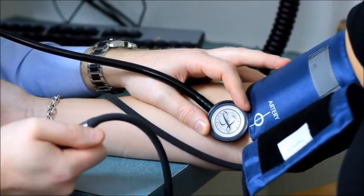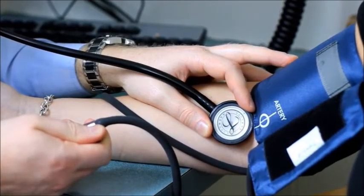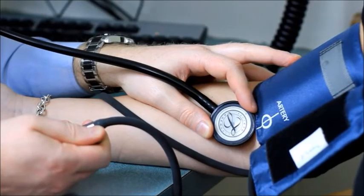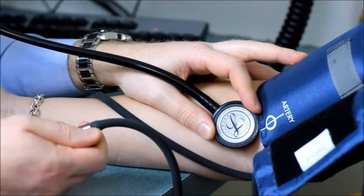The blood pressure should be measured at least twice, waiting one minute between readings, then recording the average of the two measurements. In the following example, please listen for the various phases of the Korotkoff sounds while you observe the reading on the manometer.